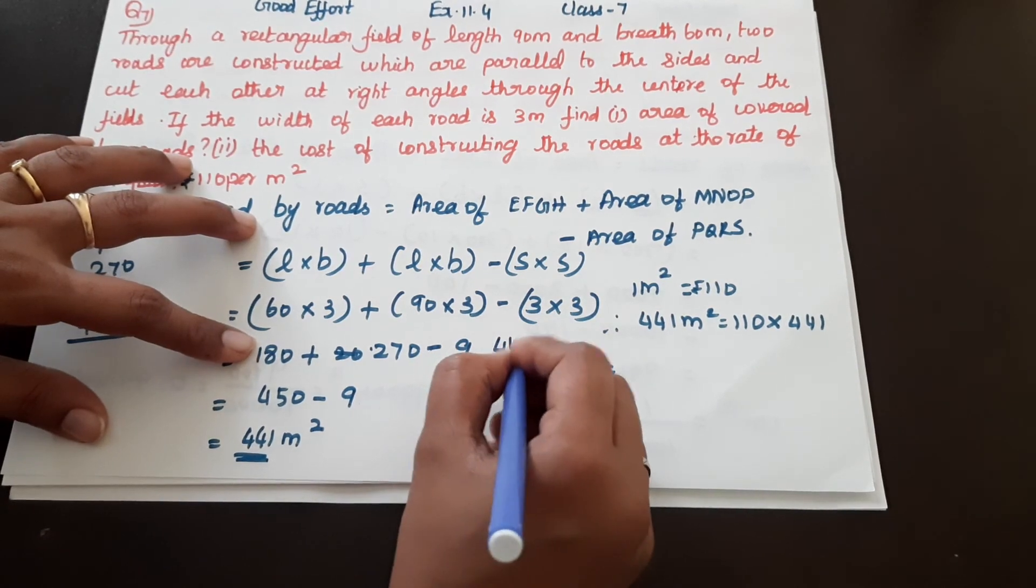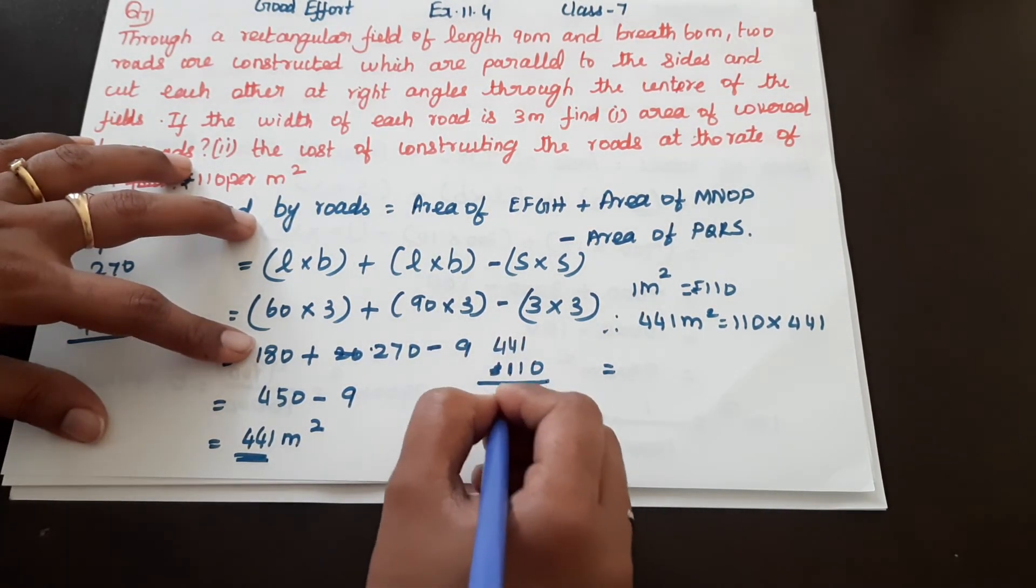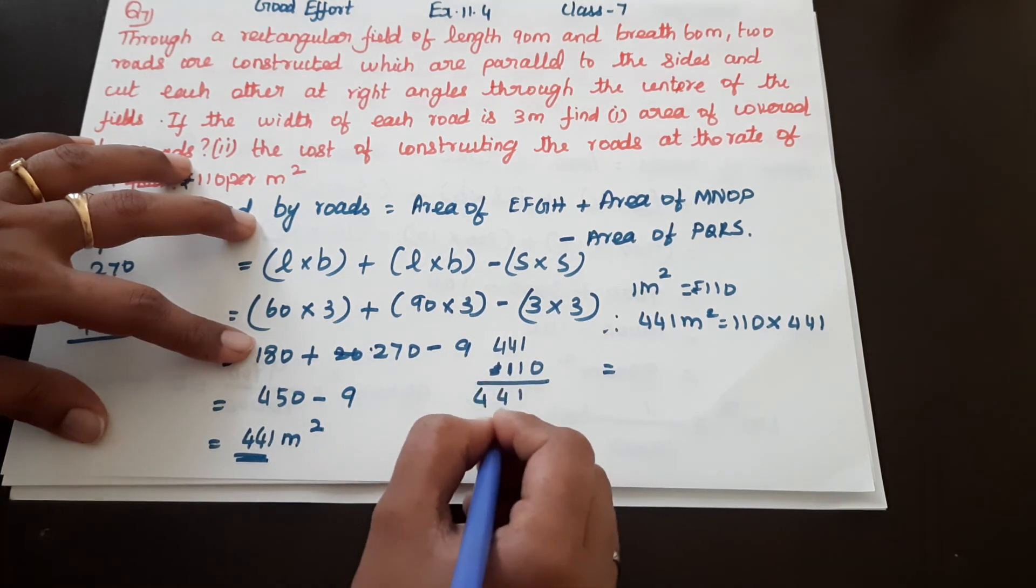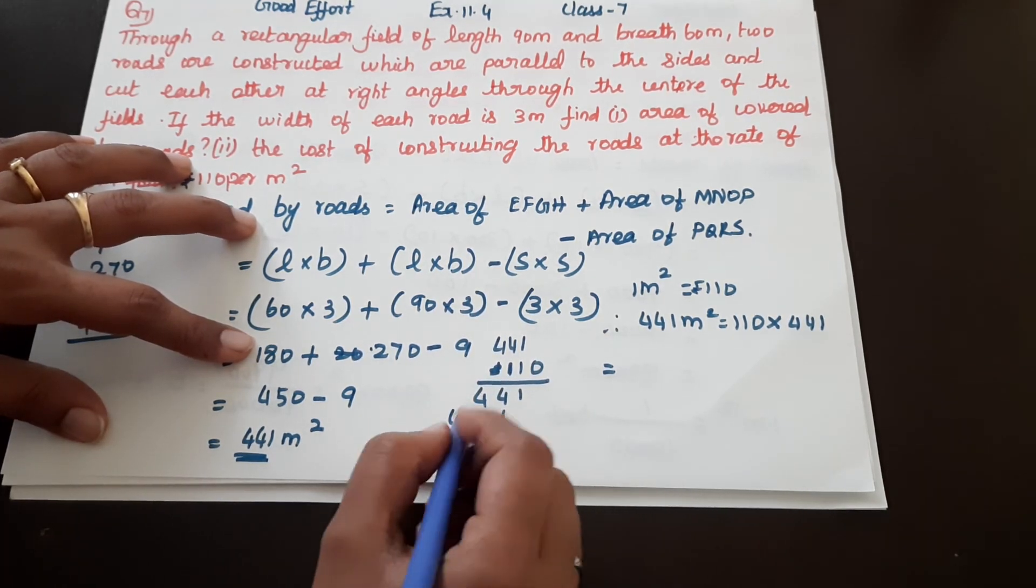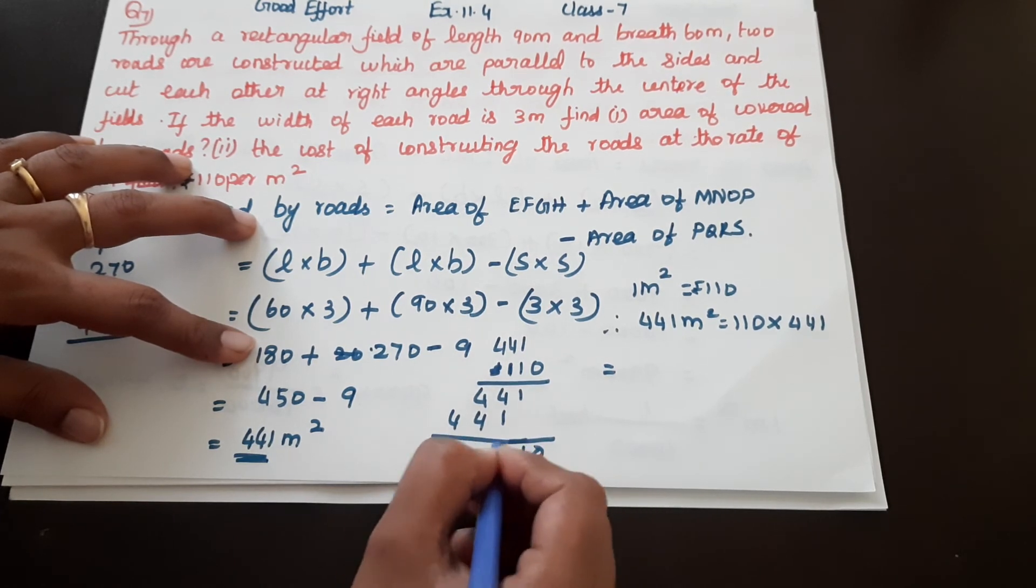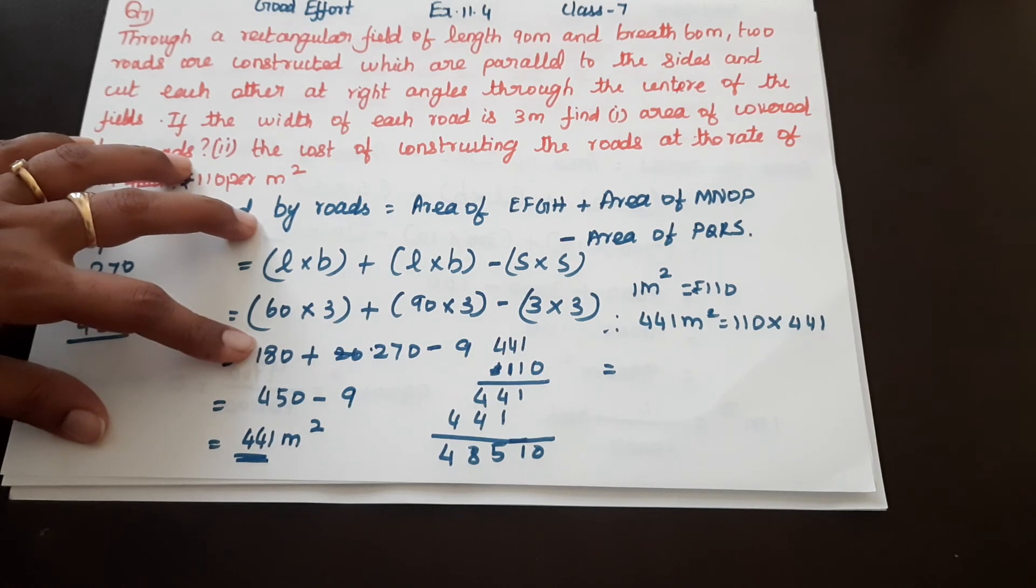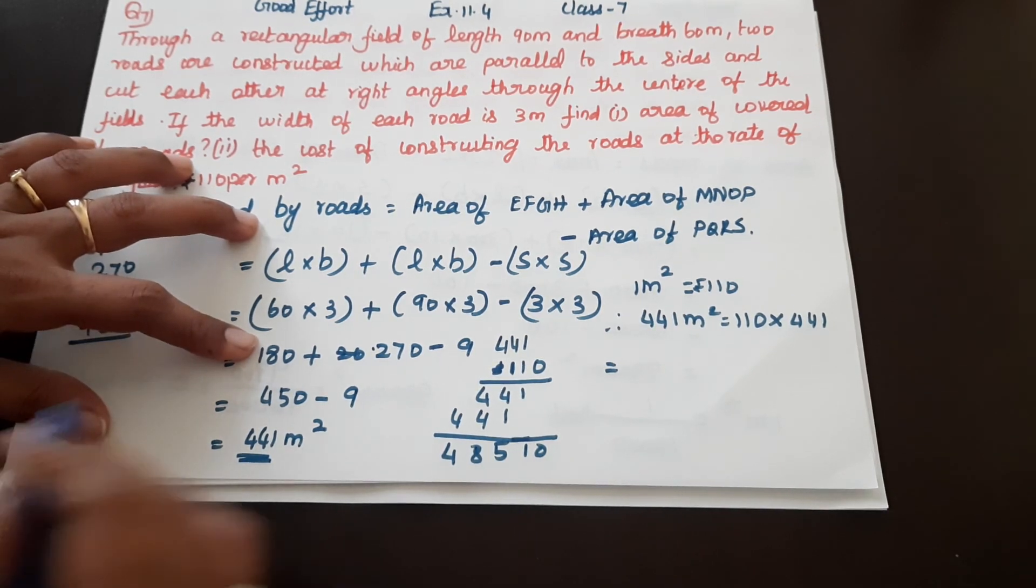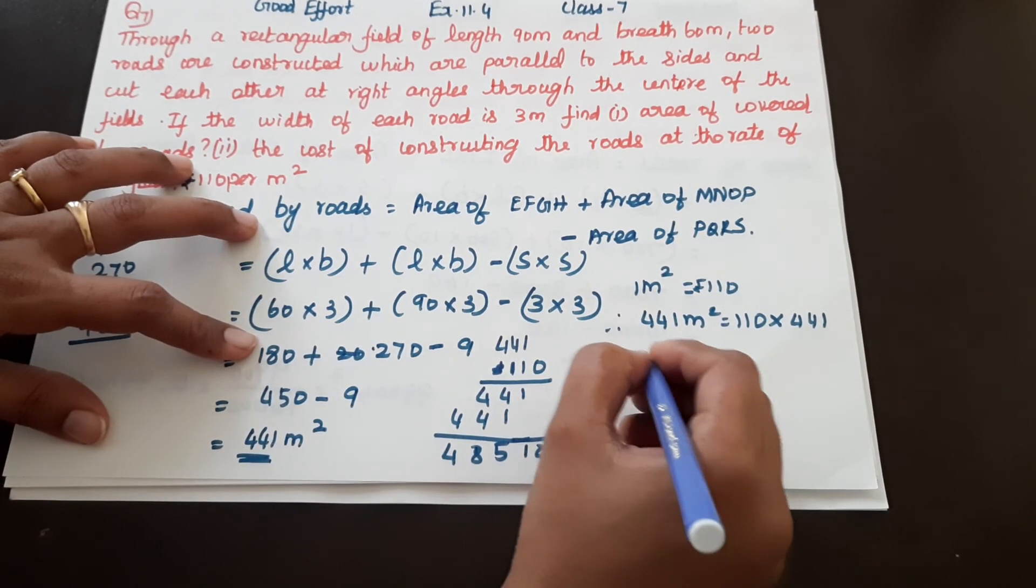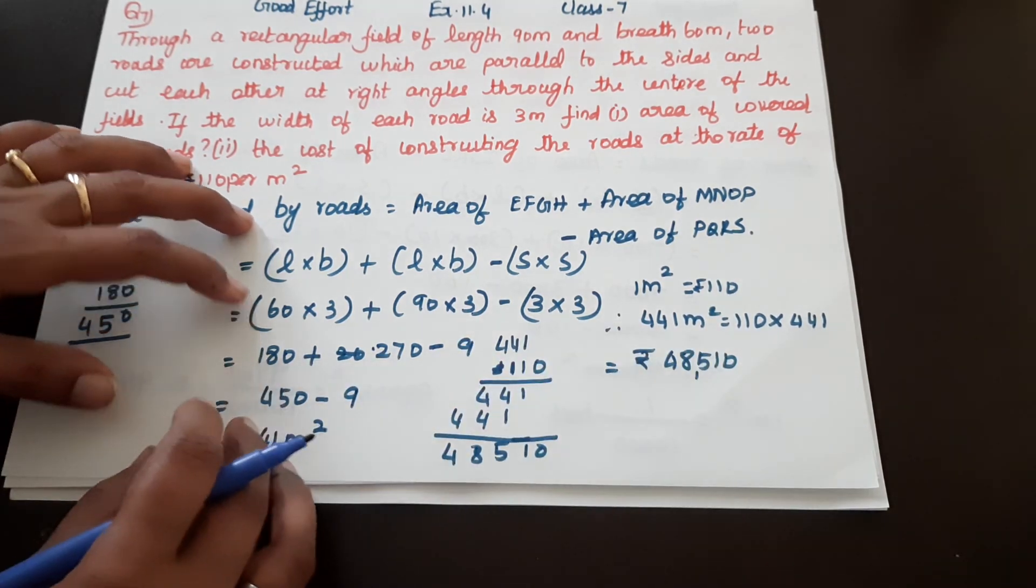So 110 into 441. 1, 4, 4. 3, 1, 4, 4. So, 0, 15, 8, 4. So, 48,510. 48,510 rupees.